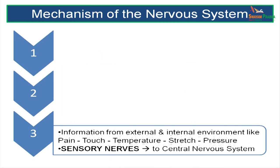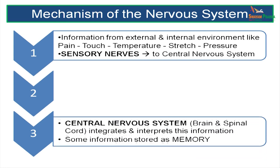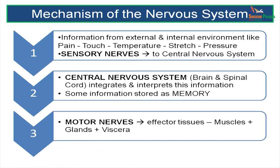What is the structure of the nervous system? The nervous system is made up of sensory nerves which receive sensations like pain, touch, temperature, stretch and pressure from the external environment, and they transmit this to the central nervous system which is the brain and spinal cord. In the central nervous system, these messages are processed and sent via the motor nerves to the periphery, to the affected tissues, the muscles, the glands and the viscera.